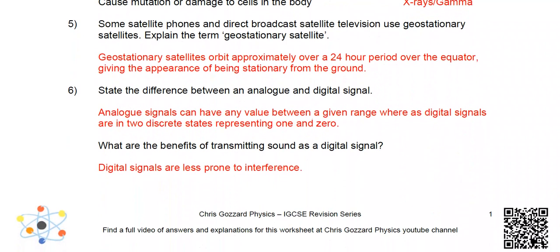Number 5. Some satellite phones and direct broadcast television use geostationary satellites. Explain the term geostationary satellite. Geostationary satellites orbit approximately over a 24-hour period over the equator, giving the appearance of being stationary from the ground. Basically, you don't have to move your satellite dish — you can just point it towards the satellite permanently.